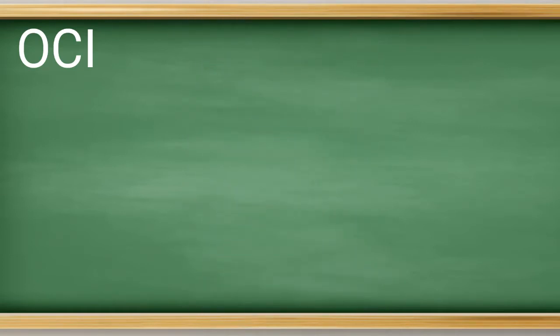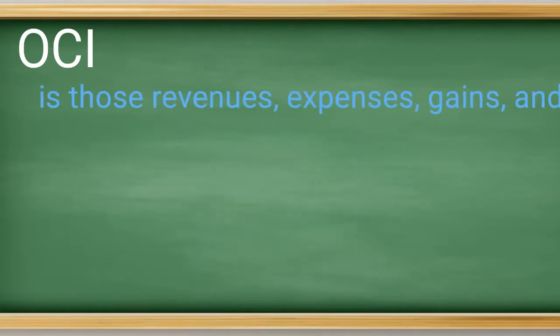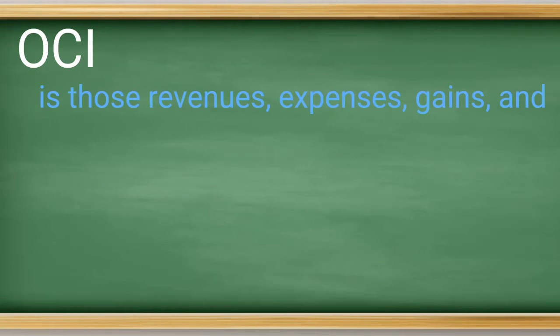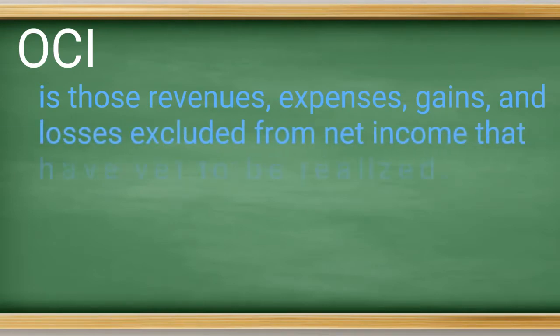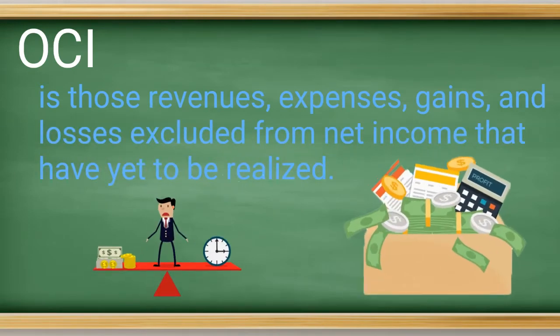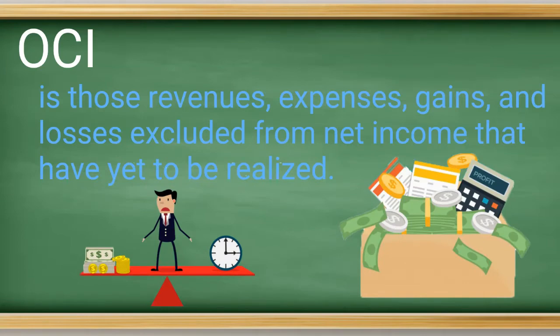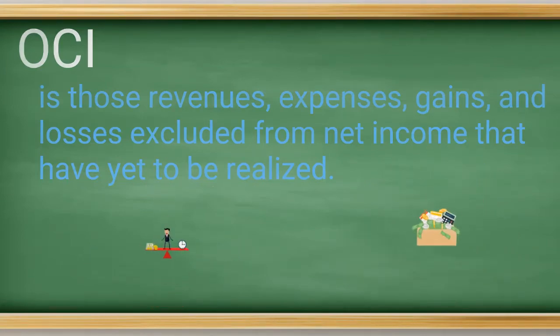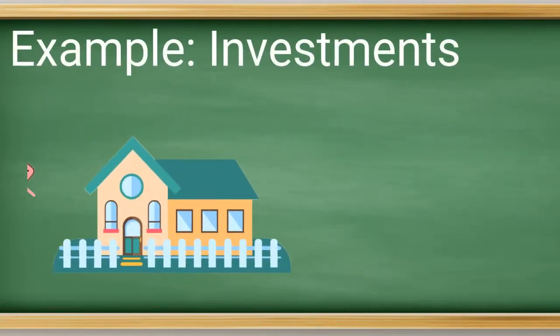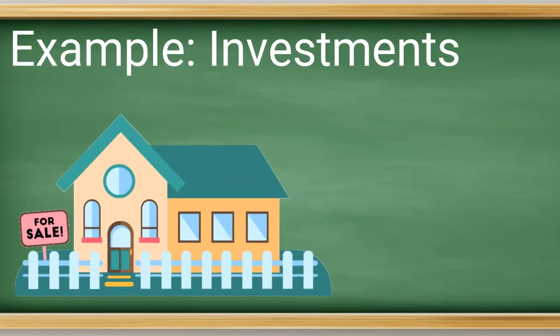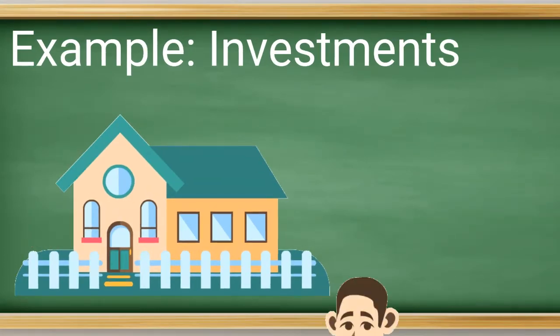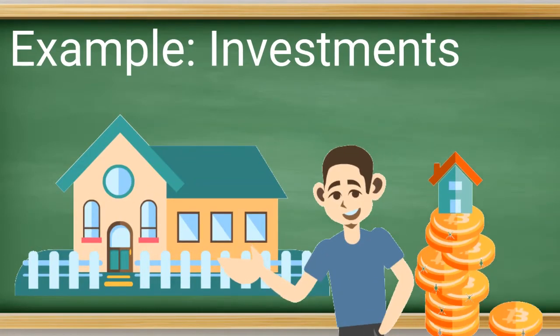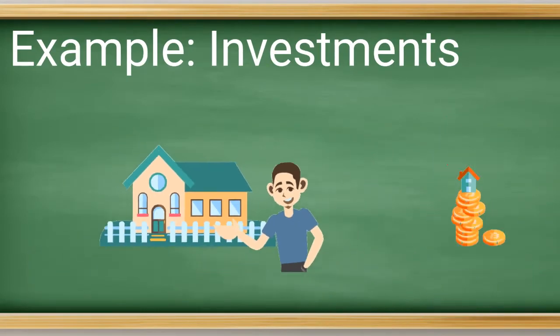So what exactly is other comprehensive income? OCI in its simplest understanding is just an accounting mechanism to include revenues, expenses, gains, and losses within the financial statements that have not been realized yet. An easy example of this would be an investment where those gains or losses have not been realized through a sale yet, but fair value has changed.